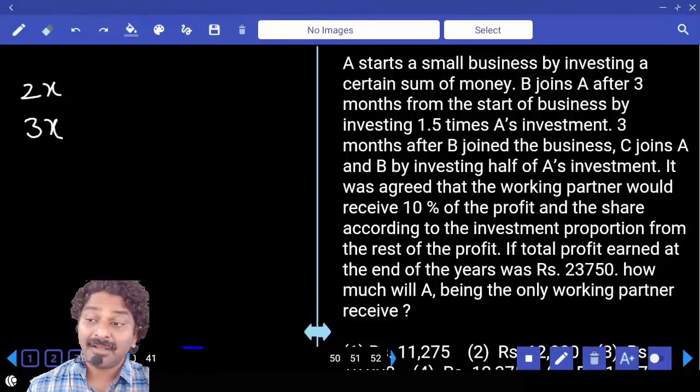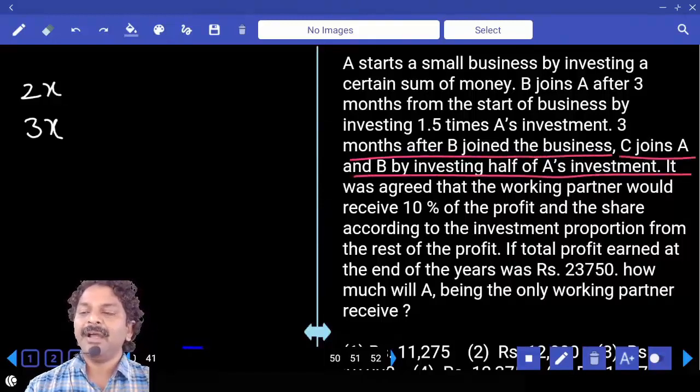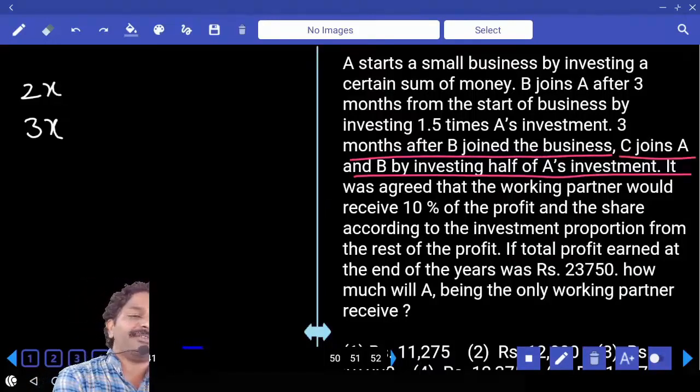And when did B join? After 3 months. 3 months after B joined the business, C joins A and B by investing half of A's investment.